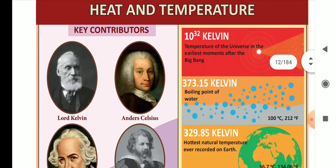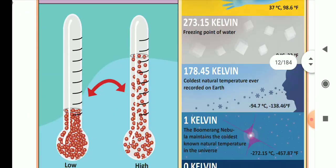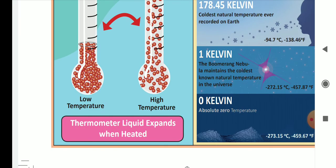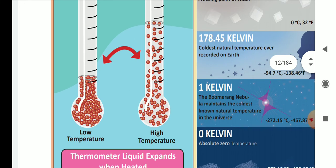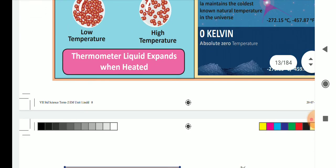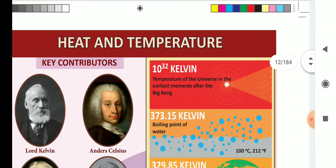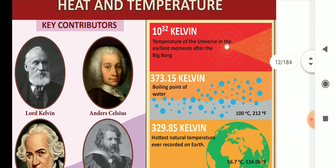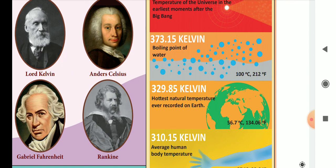Now let's talk about heat and temperature. The temperature of the universe at the earliest moment after the Big Bang was 10 to the power 32 Kelvin. The boiling point of water is 100 degrees Celsius, 212 degrees Fahrenheit, and 373.15 Kelvin.